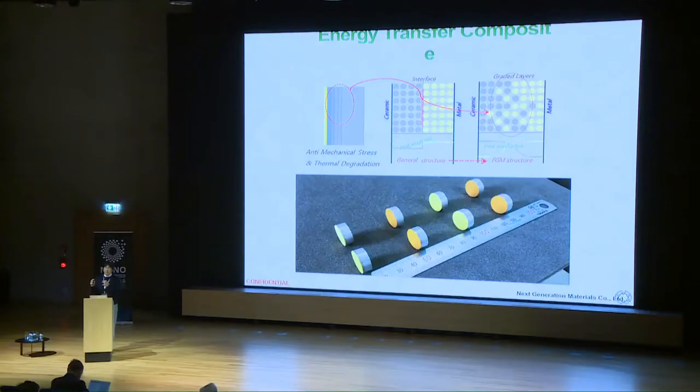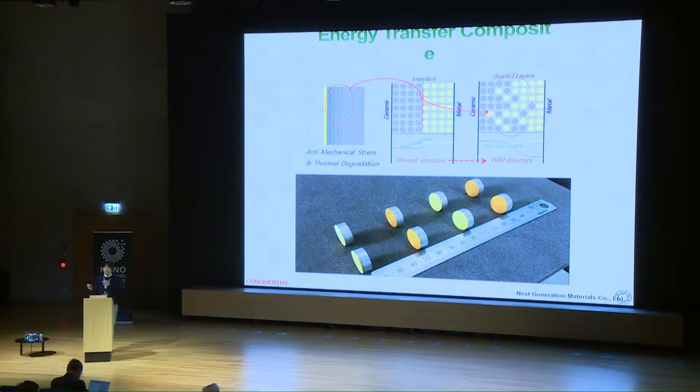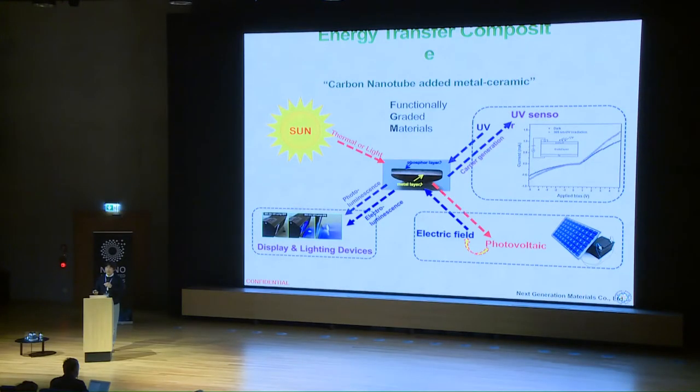Next is the functionally graded material for energy transfer. Everyone knows that metal and ceramic cannot easily be combined, but through spark plasma sintering they can be bonded together. The important property is that heat and electrical energy should flow smoothly across the layers. CNT can also accelerate this property because it has very high thermal and electrical conductivity. When this material is exposed to light, heat, UV light, or nuclear radiation, it can give a detectable signal. I will show you an example.